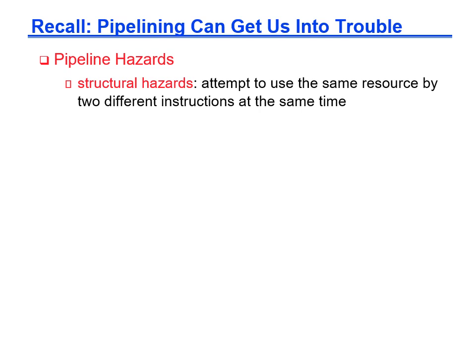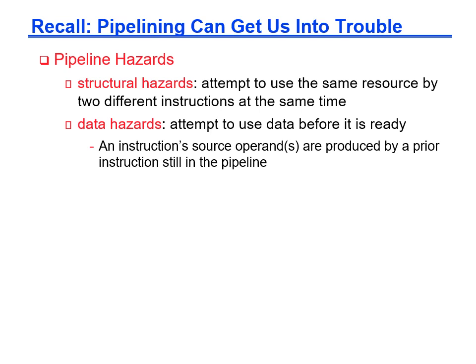Structural hazards are attempts to use the same resource by two different instructions. These hazards occur when two instructions need access to the same physical resource, and they have been avoided in the MIPS pipeline through careful design that we will discuss briefly.